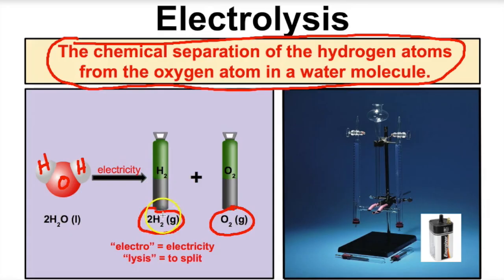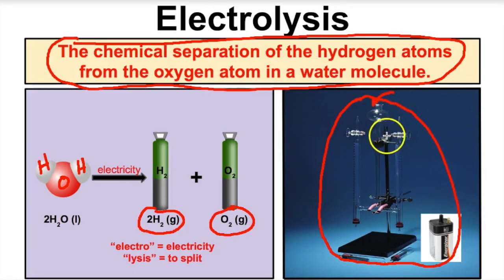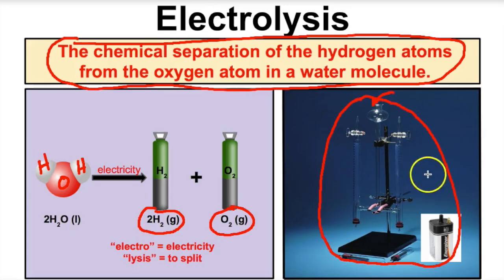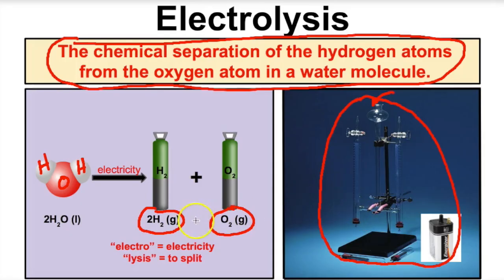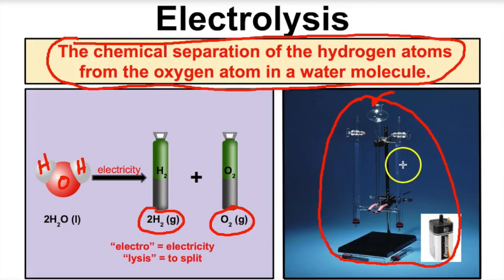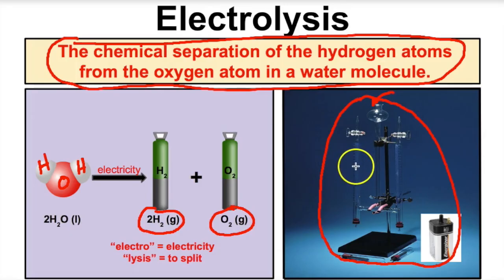This is an electrolysis apparatus. You pour water into here, add a little diluted sulfuric acid to make sure the electric current is conducted. The tubes fill up, and you hook these electrodes up to a battery. When you do that, you're going to see bubbles appearing in the columns — the water is being converted into hydrogen gas and oxygen gas. You'll end up with hydrogen gas in one column and oxygen gas in the other. Electrolysis is the chemical separation of the hydrogen atoms from the oxygen atom in a water molecule, and that is a chemical process.